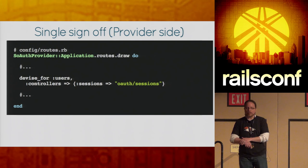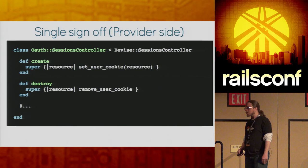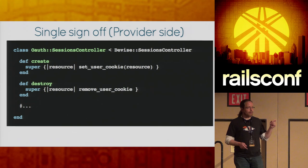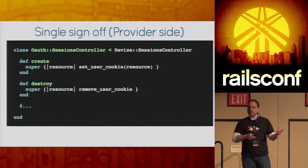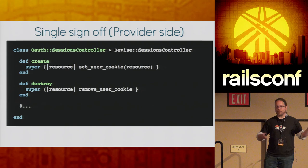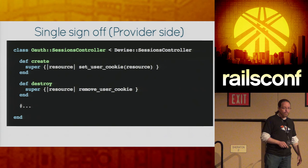To hook this up with Devise, in your Devise for users block in the routes you tell it you want to use a custom sessions controller. You implement a new controller that inherits from Devise sessions controller, and in our create and destroy methods we just call super and pass it a block. Devise makes it easy to stick in extra functionality around what it provides. In the create method, we're basically saying: Devise, do your thing, create the user session, get them logged in, and after you do that but before you redirect, let me set that user cookie. Same with destroy — after Devise has destroyed the user session on the provider but before it redirects, we remove the user cookie.